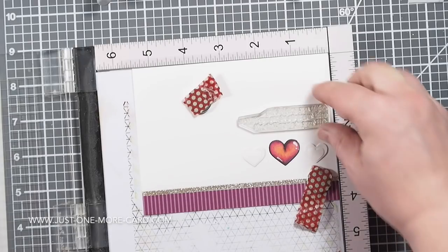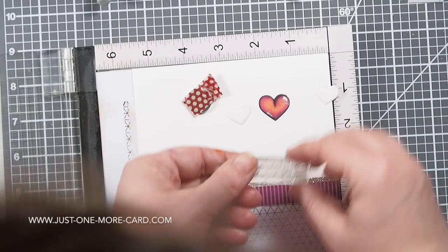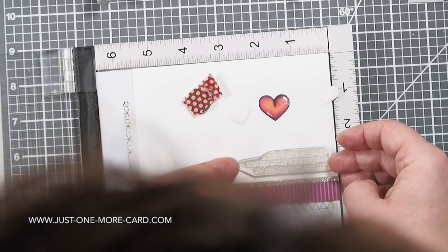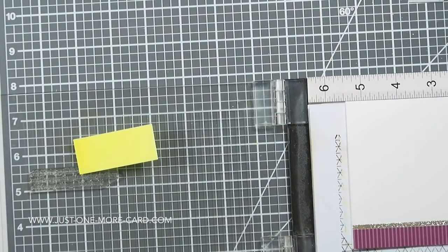Now I've put the card base in my MISTI, and now I'm trying to figure out where the sentiment's supposed to go. Should it go on the top or on the bottom or below the hearts? And I decided to do it below the hearts.